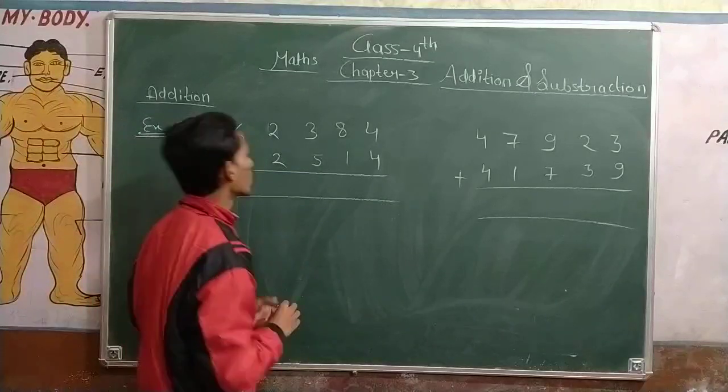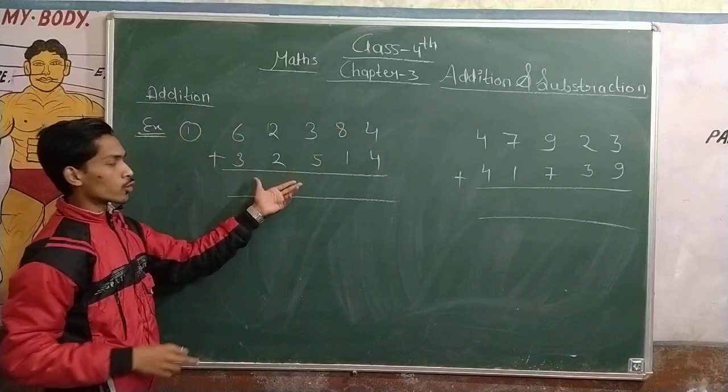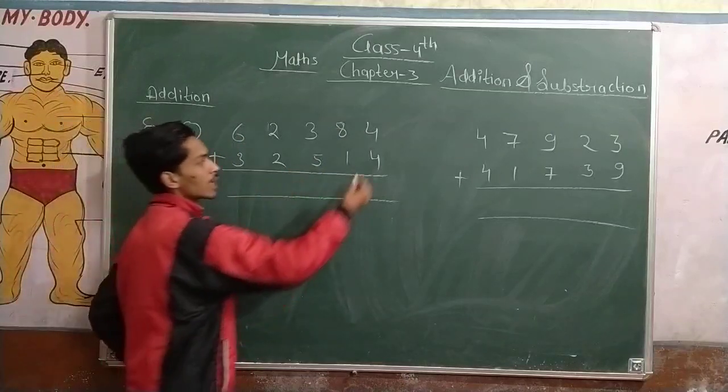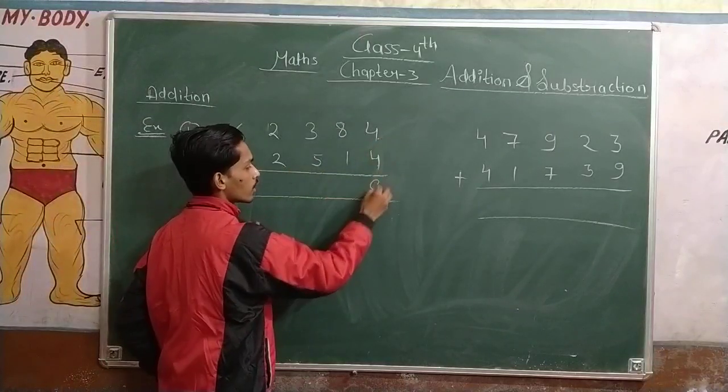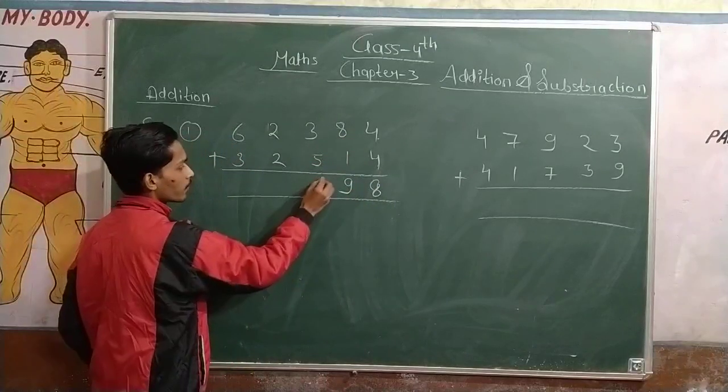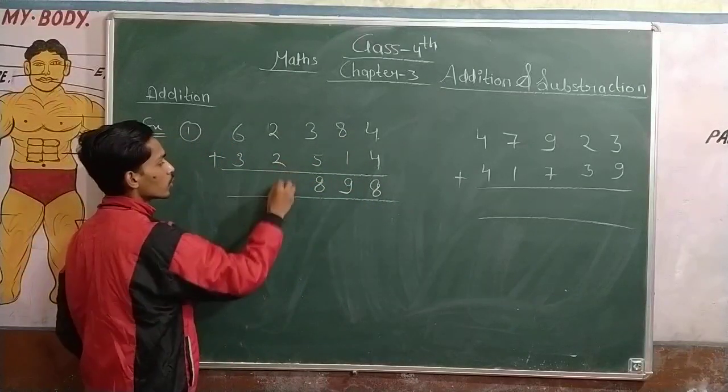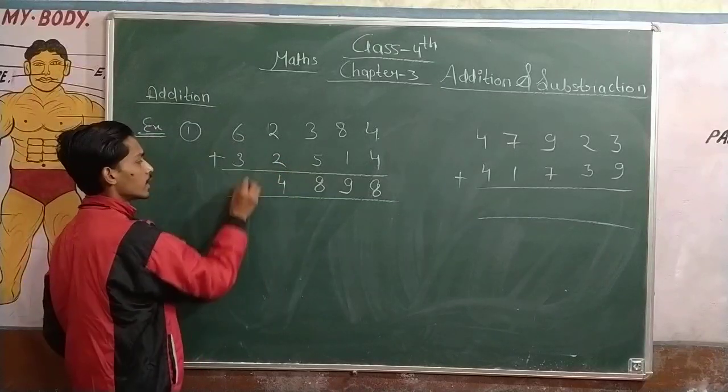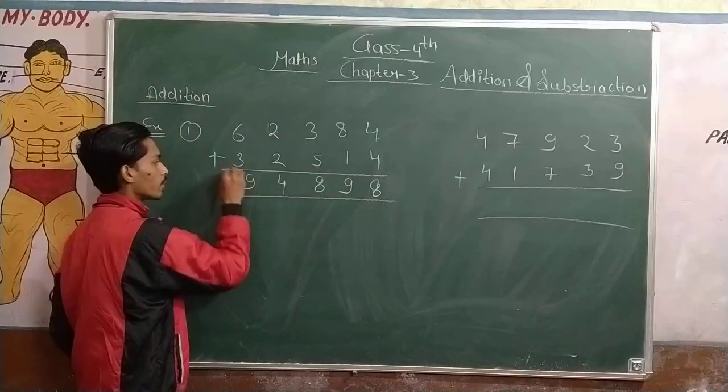First of all, Addition is revised. Addition means 4 plus 4, 8. 8 plus 1, 9. 3 plus 5, 8. 2 plus 2, 4. 6 plus 3, 9. So what we have to do is add.